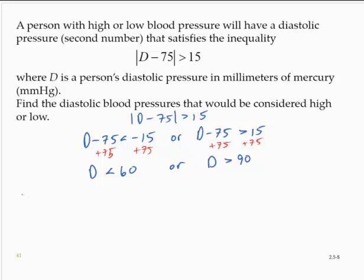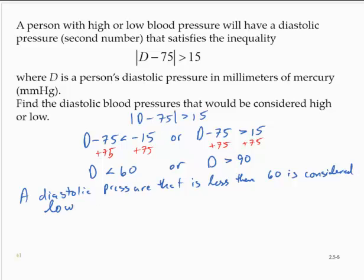So a diastolic pressure that is less than 60 is considered low. A diastolic pressure that is greater than 90 is considered high.